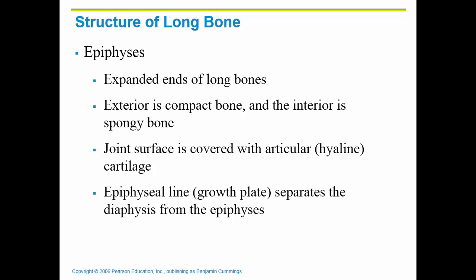On the joint surface — the outside of the epiphyses — there's hyaline cartilage, called articular cartilage, that allows for a smooth surface at a joint. When you were growing, you had a growth plate. Once you're an adult and stop growing, it becomes an epiphyseal line, separating the diaphysis from the epiphyses. At my age it is an ossified line, but at your age you still have a bit of cartilage allowing for growth.